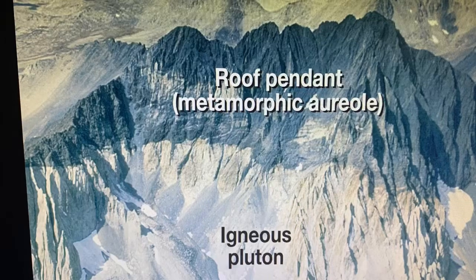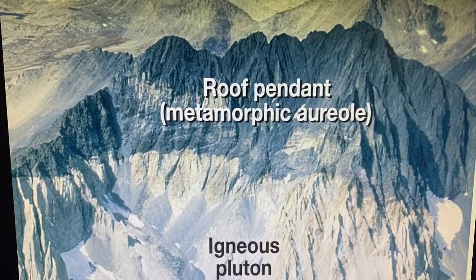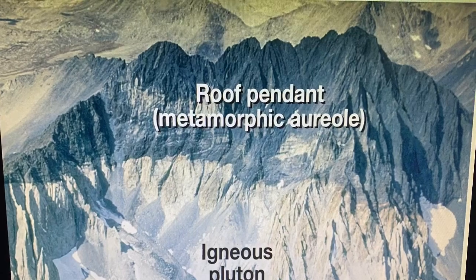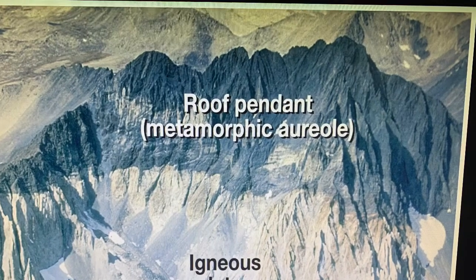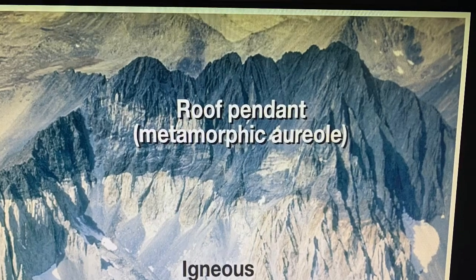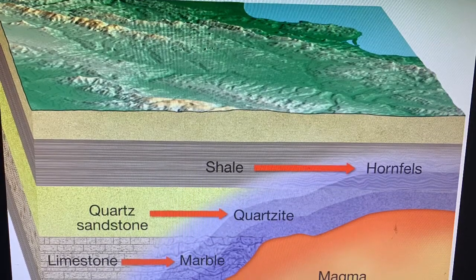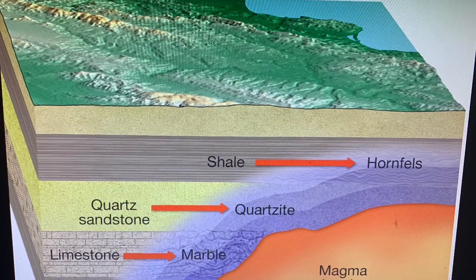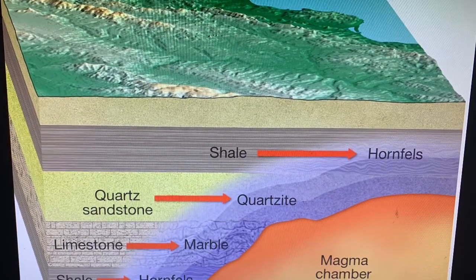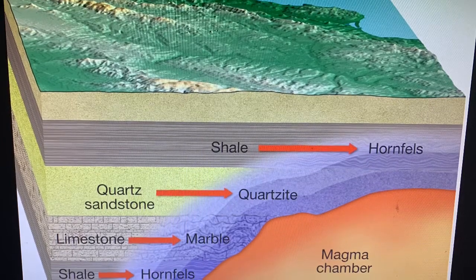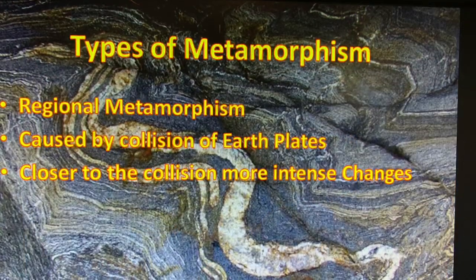You can actually see an exposed example at the top of a mountain: an igneous pluton of granite with a metamorphic aureole — called a roof pendant — of darker rock on top that was host rock metamorphized by the magma. Uplift brought what was underground up thousands of feet. Contact metamorphism can turn shale into hornfels, limestone into marble, and quartz sandstone into quartzite, all within that bluish-purple aureole around the magma chamber.